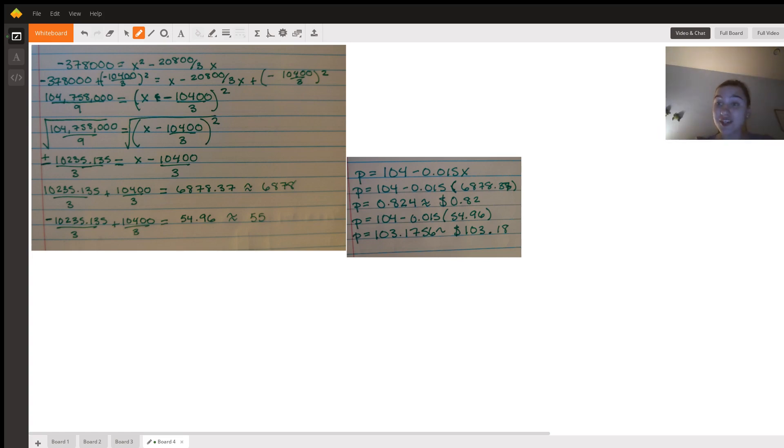Now that it's factored, we can just take the square root of both sides. So we take the square root of that big, ugly number, and we get this. And we have that plus or minus. That plus or minus is important when we're taking square roots.